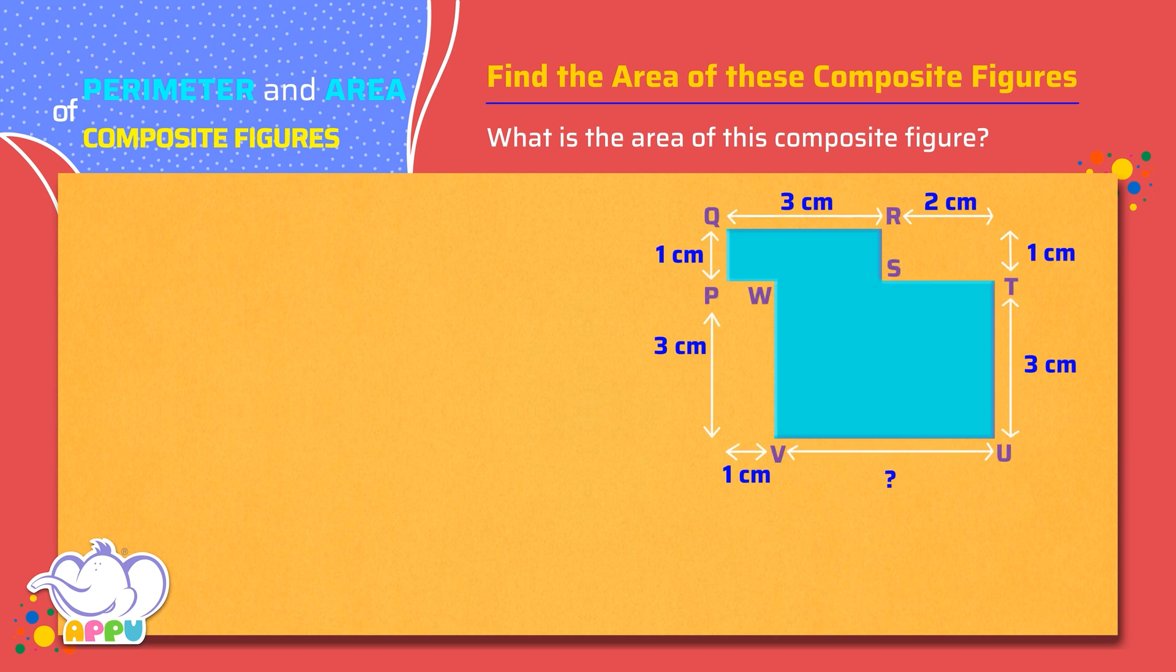Let's divide this composite figure into two rectangles: Rectangle A and Rectangle B.